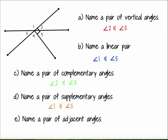To name a pair of adjacent angles, there are a lot of angles in this picture that are adjacent. Remember, adjacent angles are just side by side — they have a vertex in common, which all five angles do, and they share a side. So I could have picked from any of these angle pairs for adjacent angles.